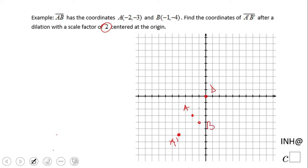Again, we're going to do the same movement: one, two, three, four and one more. We move four down - one, two, three, four - and one more here. This is because the scale factor is 2. This is point B'.